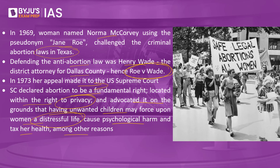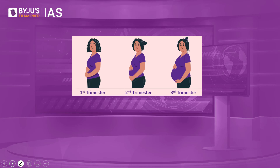The court reached this conclusion on the basis of a trimester system. The first trimester gave absolute rights to women — for the first three months of pregnancy, women could abort the fetus freely. In the second trimester, the state could impose reasonable restrictions. But in the third trimester, an absolute ban was imposed. Under Roe v. Wade, abortion in the final trimester was allowed only if the mother's life was in danger.